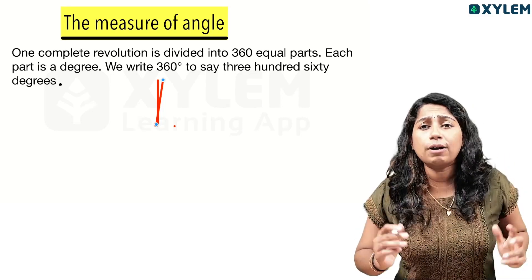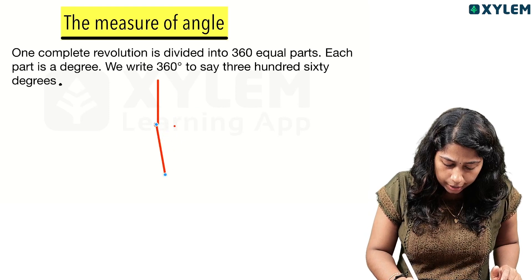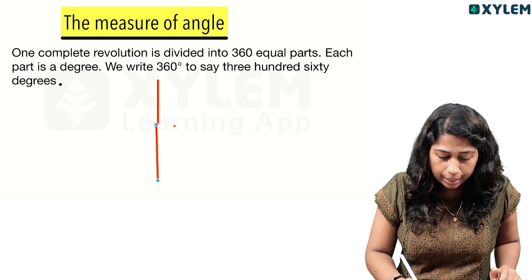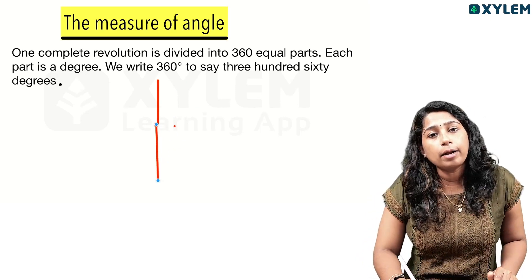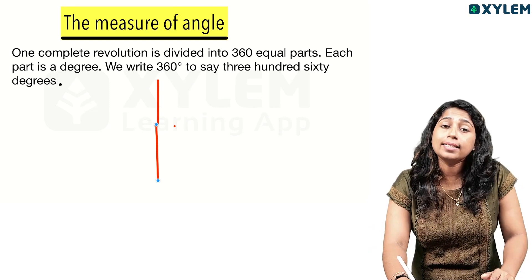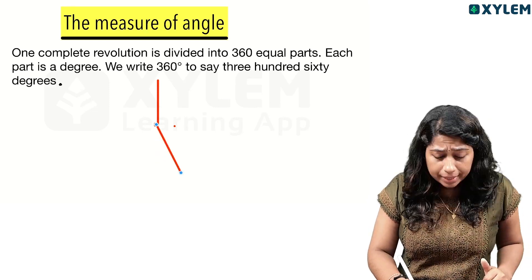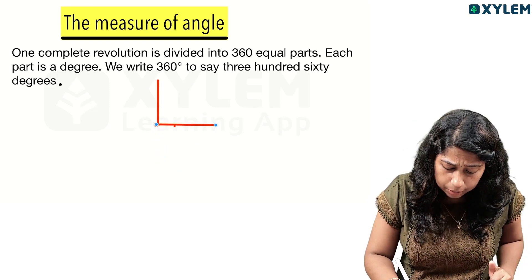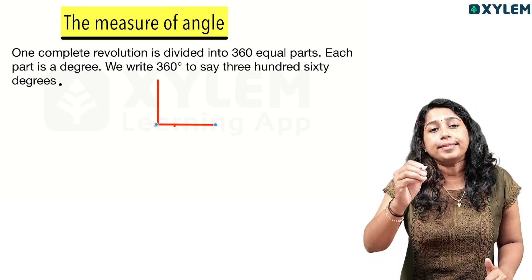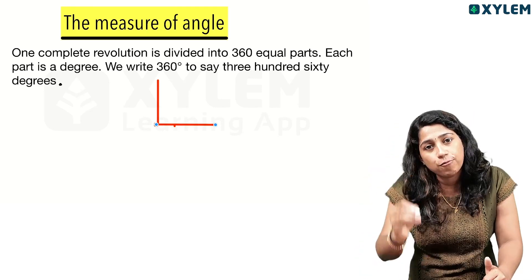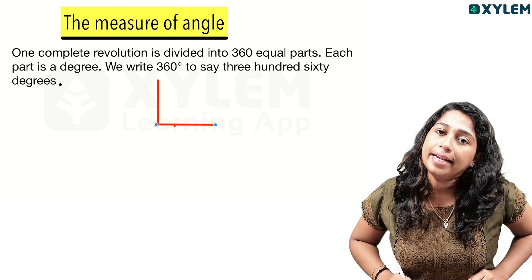A half revolution: how many degrees is that? 360 divided by 2 — that is 180 degrees. A quarter revolution: 360 divided by 4 — that is 90 degrees.